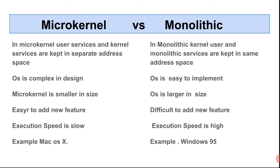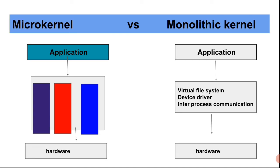Windows is a monolithic kernel operating system, while Mac and iOS devices are microkernel operating systems. These represent a wide difference between the two types of kernels.